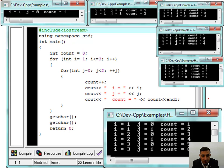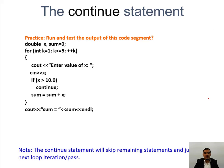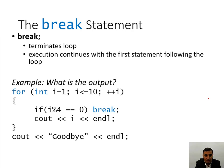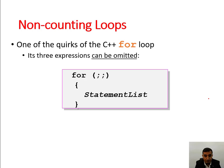The continue statement skips the rest of the loop body and goes back to the beginning of the loop. The break statement exits the loop entirely. This is especially important for infinite loops — you always need a break statement to exit an infinite loop. We will stop here on non-counting loops and continue in the next part.